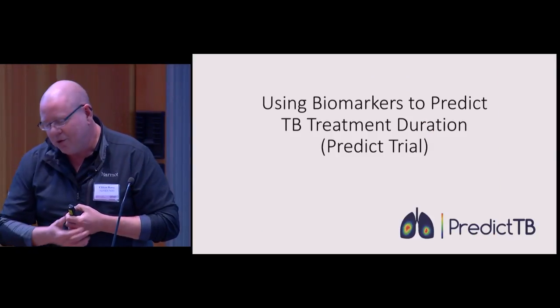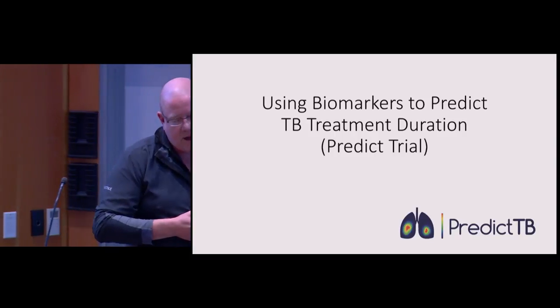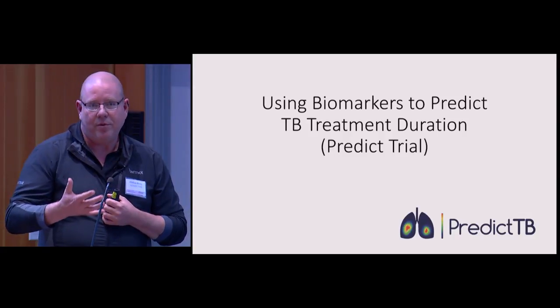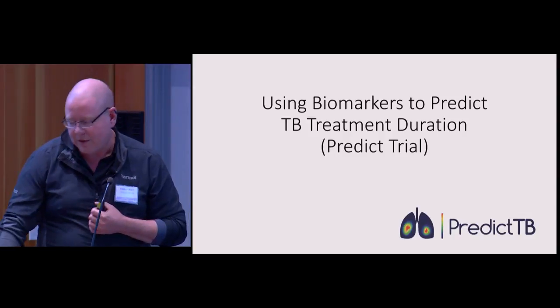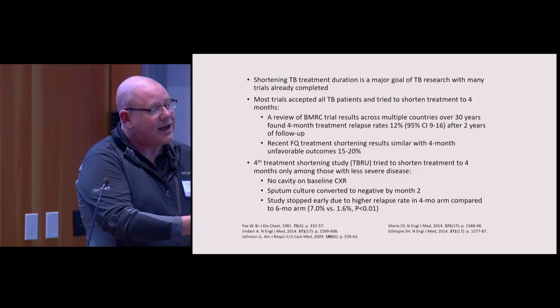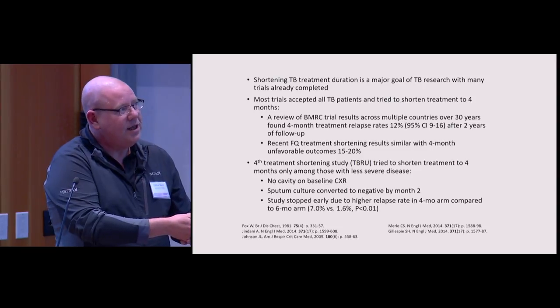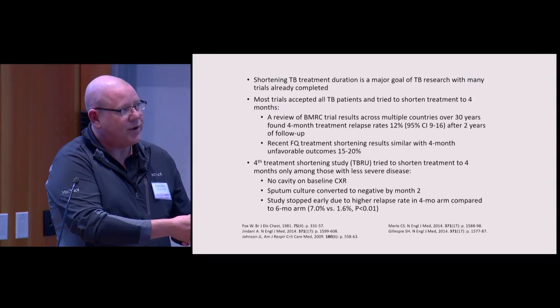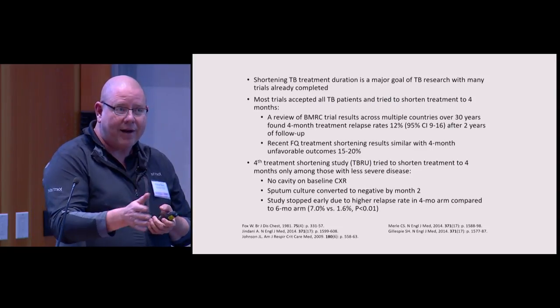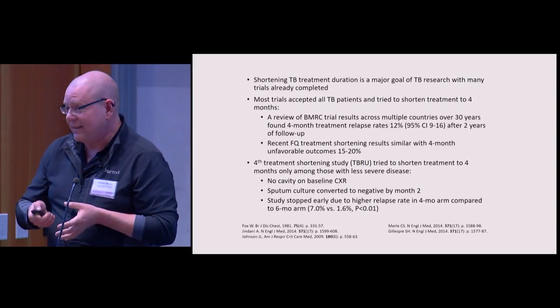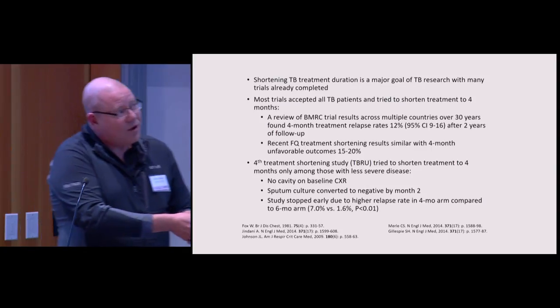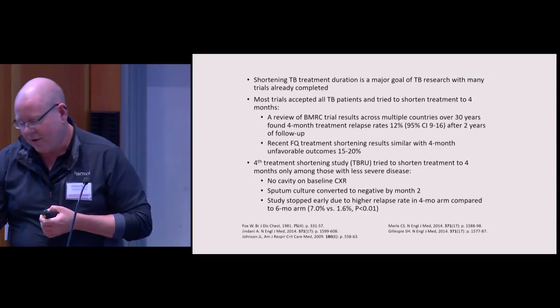That's one study that we should finish by August of this year and data analysis and report out by the end of this year. The other study I want to tell you about is a different way to use that same information called PREDICT. This is a trial that's essentially trying to use what we've learned in the monkeys and in the human trials to identify that 80% of people that are treated by four months of chemotherapy. We want to shorten treatment. The one thing I want to highlight is that this exact kind of design has been tried before. The TBRU about 10 years ago tried this by taking patients with no cavity on their baseline chest X-ray, who were sputum culture negative by month two, and randomly assigning them to stop after four months or continue to six months. They were stopped early by their data safety board because the arm stopping at four months had an unacceptably high relapse rate.